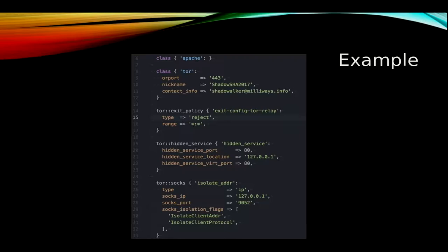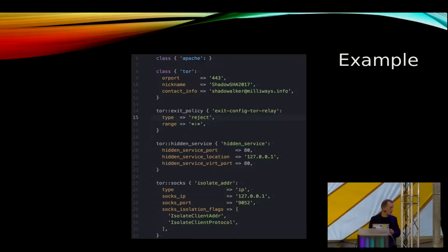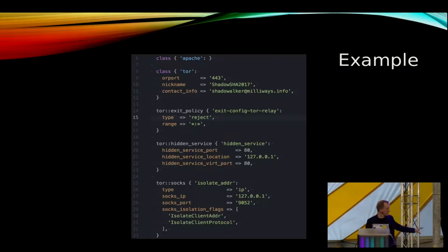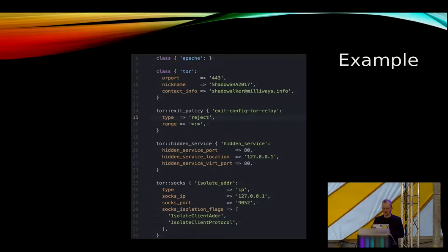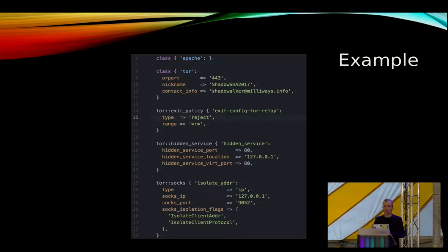You can also see that we can install a Tor hidden service — again, not many lines of code. It will listen on port 80 and connect back to localhost port 80, which in this case is our Apache installation. This allows us to install a hidden service very quickly. The last block shows how you can add isolation flags to your SOCKS proxies — this feature is somewhat hidden in the Tor documentation, but it's all built into the module. This adds another SOCKS proxy on port 9052 with two isolation flags.